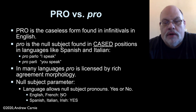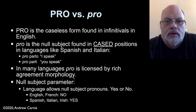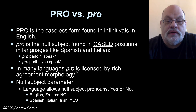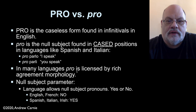It is worth noting that this correlation with rich agreement morphology holds primarily in European languages. In languages of Asia, they also have Baby Pro, but they don't have the rich morphology that goes along with it. Instead, Pro seems to be licensed in those languages by context — if there's sufficient context that you can deduce who the subject is, you can simply leave off the subject pronoun and use a Pro instead.